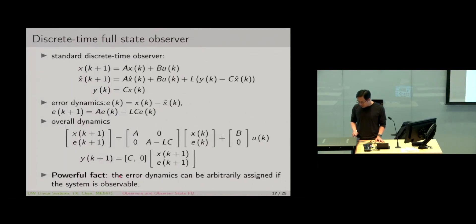So we have this powerful fact: the error dynamics can be arbitrarily assigned if the system is observable. In other words, the observer can be made arbitrarily accurate to estimate the state. If E is zero, that means X hat is going to equal X.